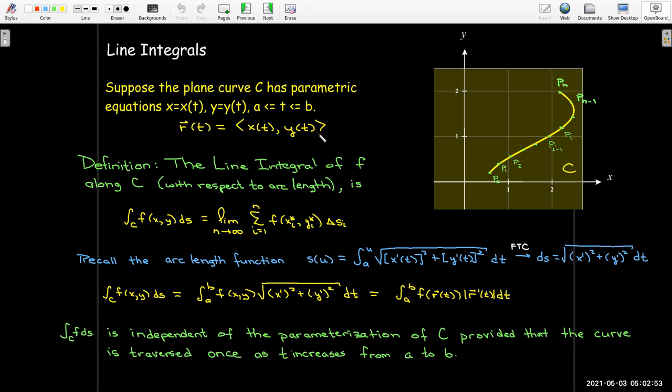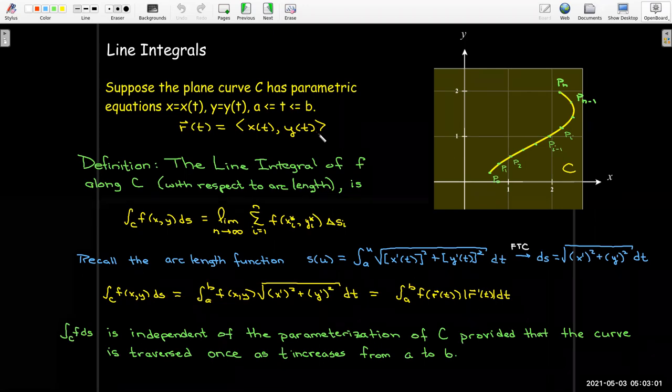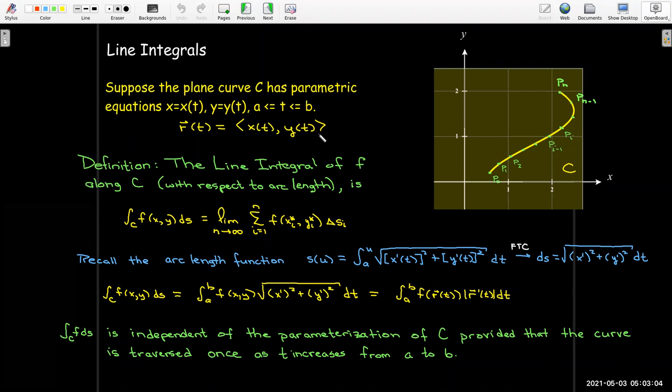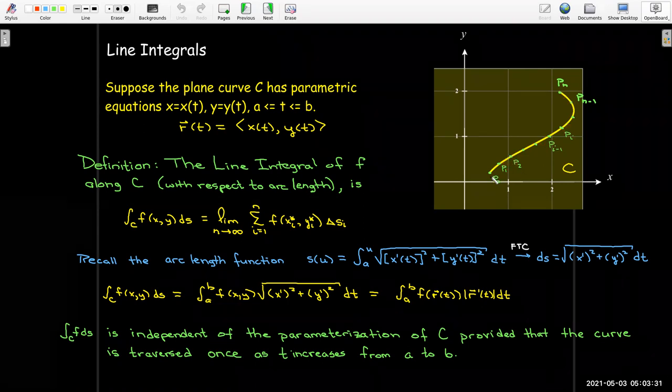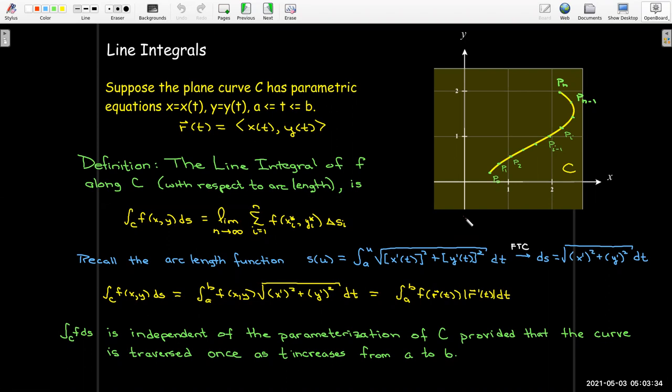We know that the same curve can have many different parametric representations or parameterizations, but the value of the line integral with respect to arc length should be the same as long as you traverse the curve only once as t increases from a to b. If I have an open curve, that means I don't go to the end point, then turn around and start coming back again. Or if I had a closed curve, that means I would go around that closed curve only once.